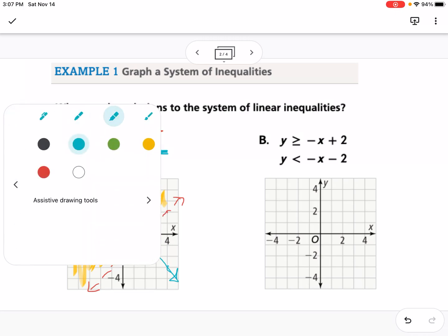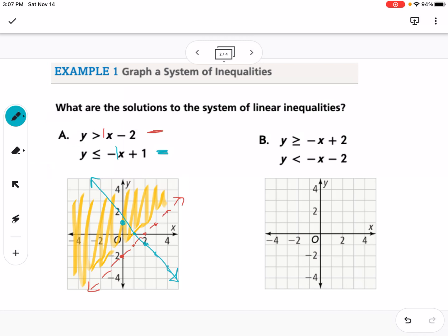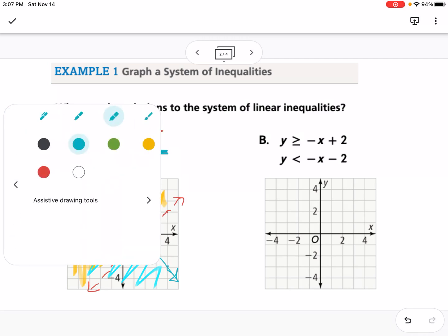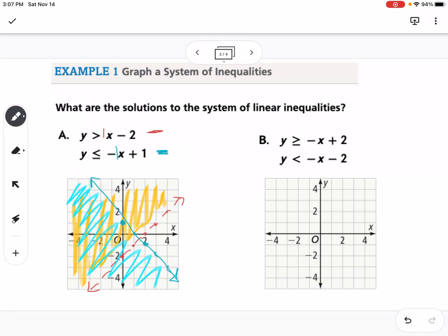Let's use blue to shade. This one is y is less than or equal to, so we want to shade below it. If we look here, we can tell that our solution region is this double-shaded region right in here. Any point that falls in that double-shaded region is a solution to this system of inequalities.